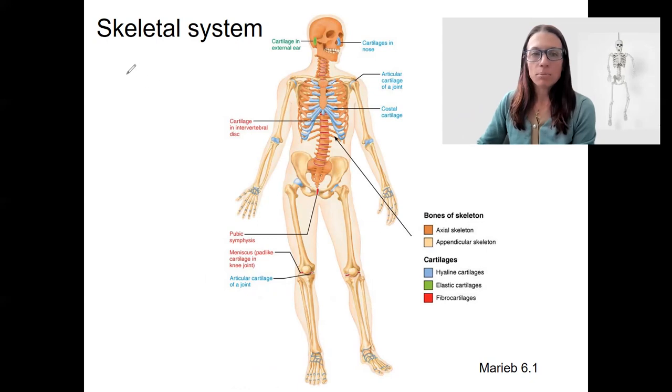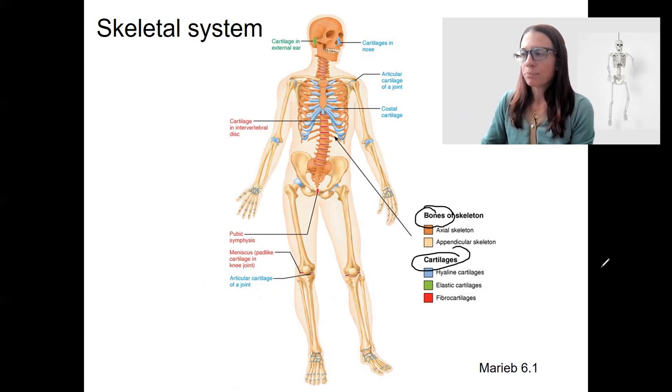They are the bones and the cartilage. And this then also includes ligaments. We'll talk about ligaments more when we talk about joints next week. There's a lot of other connective tissue that links together the skeleton.